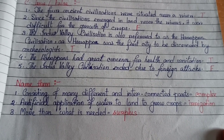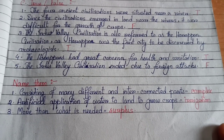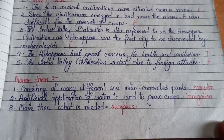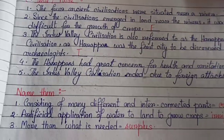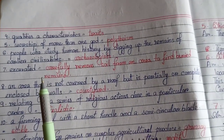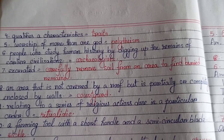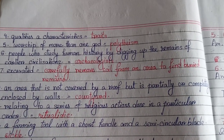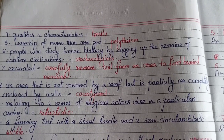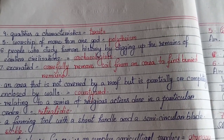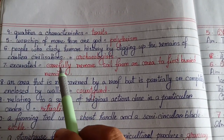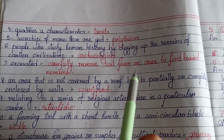Next, Name them. Number one: Consisting of many different and interconnected parts — complex. Number two: Artificial application of water to land to grow crops — irrigation. Number three: More than what is needed — surplus. Number four: Qualities or characteristics — traits. Number five: Worship of more than one god — polytheism. Number six: People who study human history by digging up the remains of earlier civilizations — archaeologists.